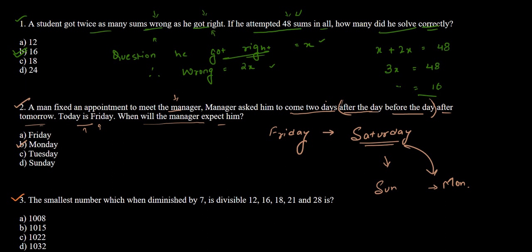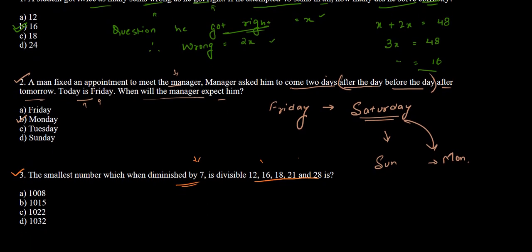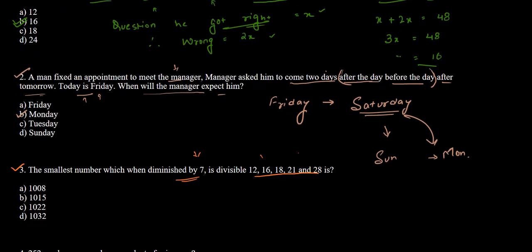Question 3: Find the smallest number which when diminished by 7 is divisible by 12, 16, 18, 21, and 28. We need the LCM of these numbers, but the number must be diminished by 7. Let us consider the smallest number to be x, so x − 7 must be divisible by all these numbers.